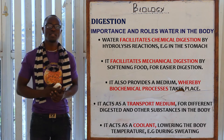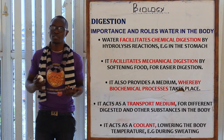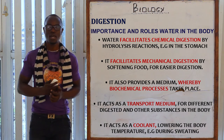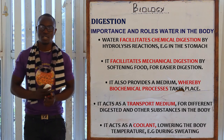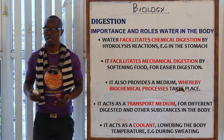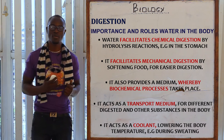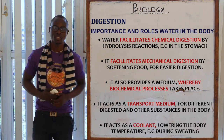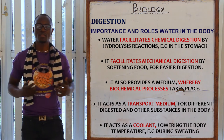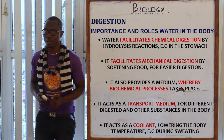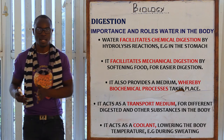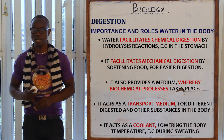Let's look at the roles of water in the body. First, water facilitates chemical digestion through hydrolysis reactions. It also facilitates mechanical digestion by softening the food, as seen in saliva which contains water. Water also provides a medium in which biochemical processes take place, and acts as a transport medium — blood contains water which aids in the formation of plasma.